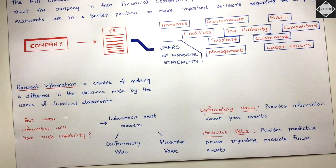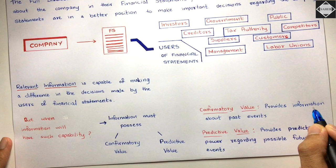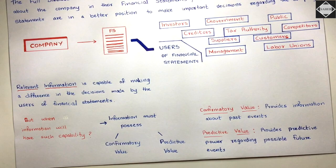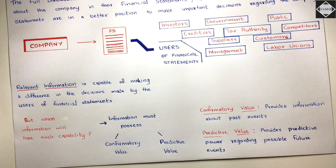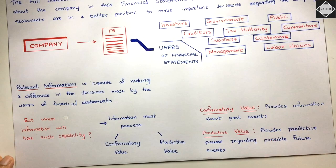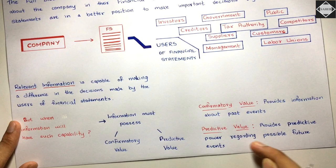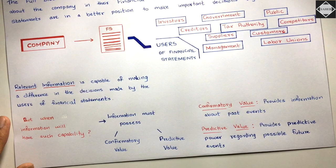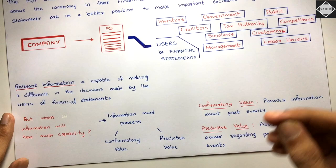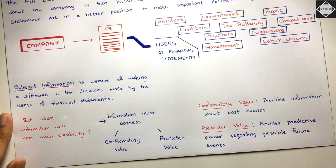Confirmatory value means it confirms something that happened in the past — it provides information about past events. For example, in December we had revenue of 50 lakhs — this provides information about a past event. Predictive value means it provides predictive power regarding possible future events. It gives the reader the ability to forecast something — to predict that a certain event may happen in future based on the information they are reading right now.